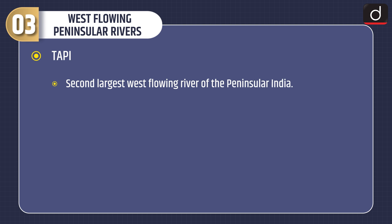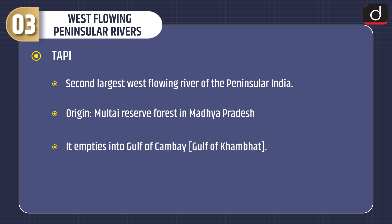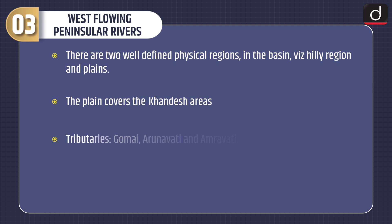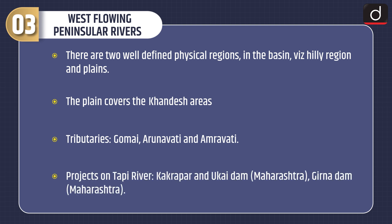Tapi is the second largest west flowing river of peninsular India. Origin: Multai reserve forest in Madhya Pradesh. It empties into the Gulf of Khambhat. Basin: Madhya Pradesh, Maharashtra and Gujarat. There are two well-defined physical regions in the basin: a hilly region and plains. The plain covers the Khandesh areas. Tributaries: Gomai, Arunavati and Amravati. Projects on the Tapi river: Kakrapar and Ukai Dam in Maharashtra, and Girna Dam in Maharashtra.